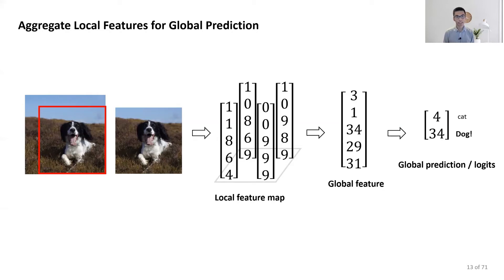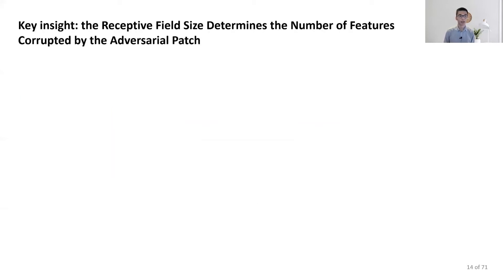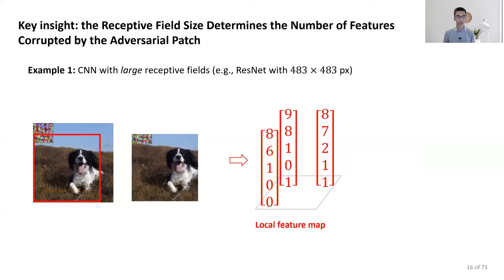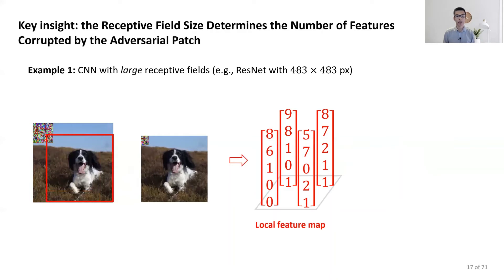Now, knowing what receptive view and local features are, our first key insight is that the receptive field size determines the number of corrupted features. Here, if we use a large receptive view, we will see all features see adversarial perturbations and are corrupted. Then there is little hope for us to make a robust prediction.